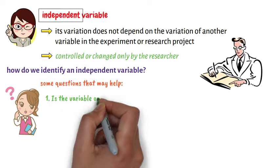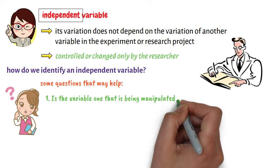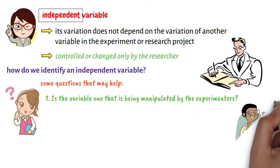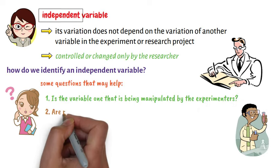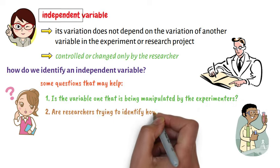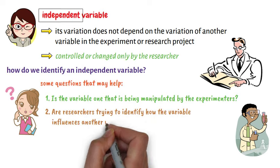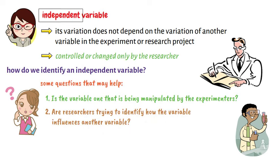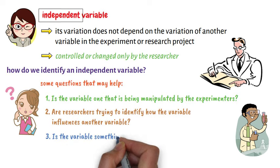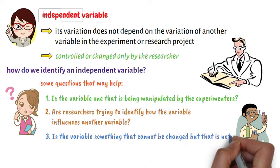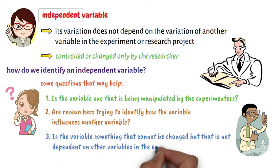First, is the variable one that is being manipulated by the experimenters? Second, are researchers trying to identify how the variable influences another variable? And third, is the variable something that cannot be changed, but that is not dependent on other variables in the experiment?